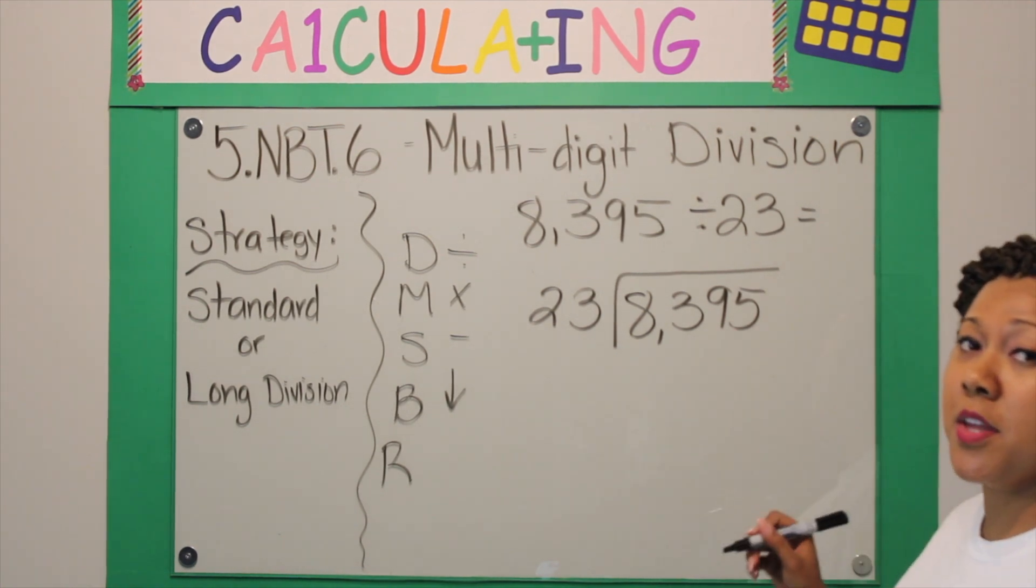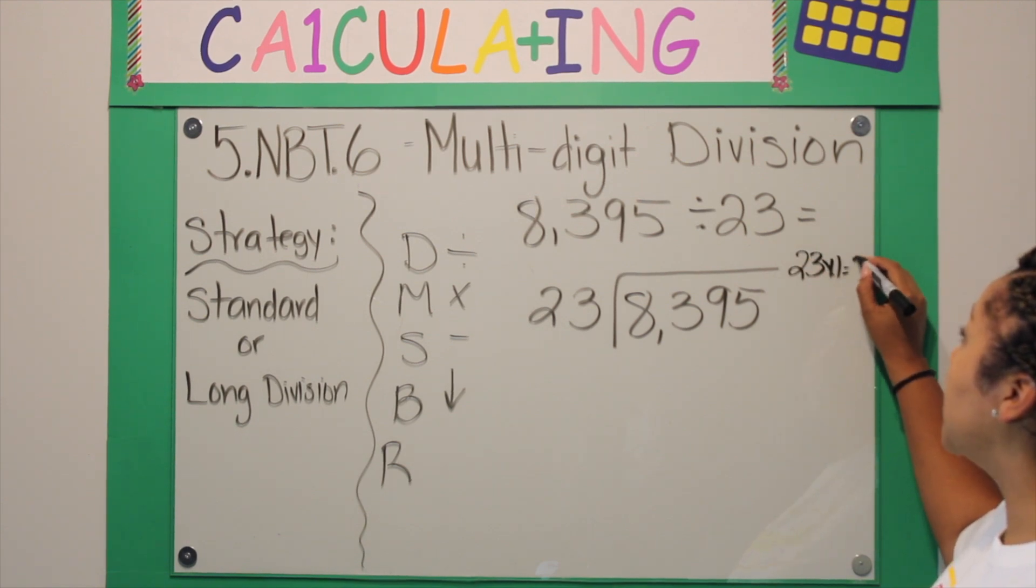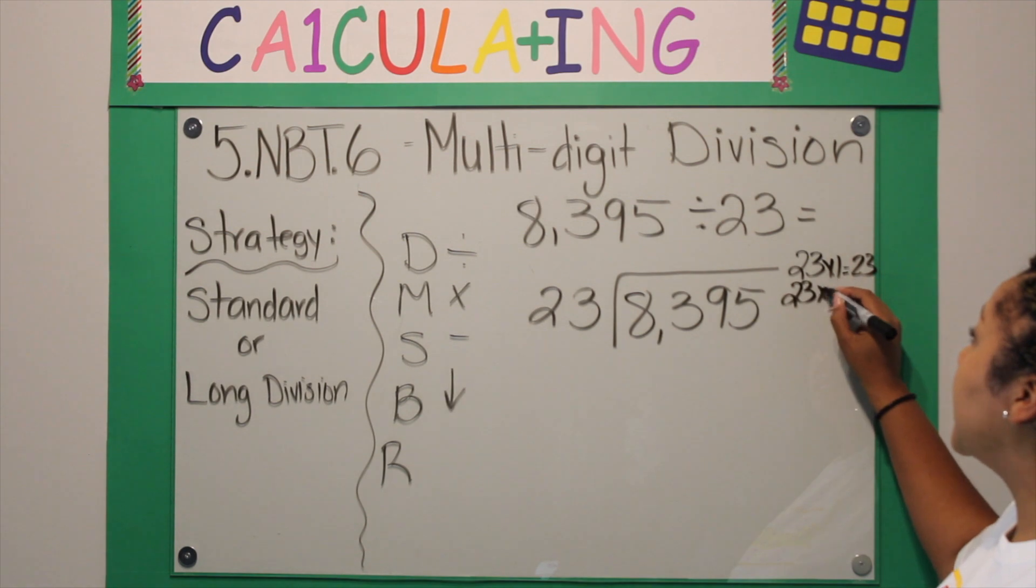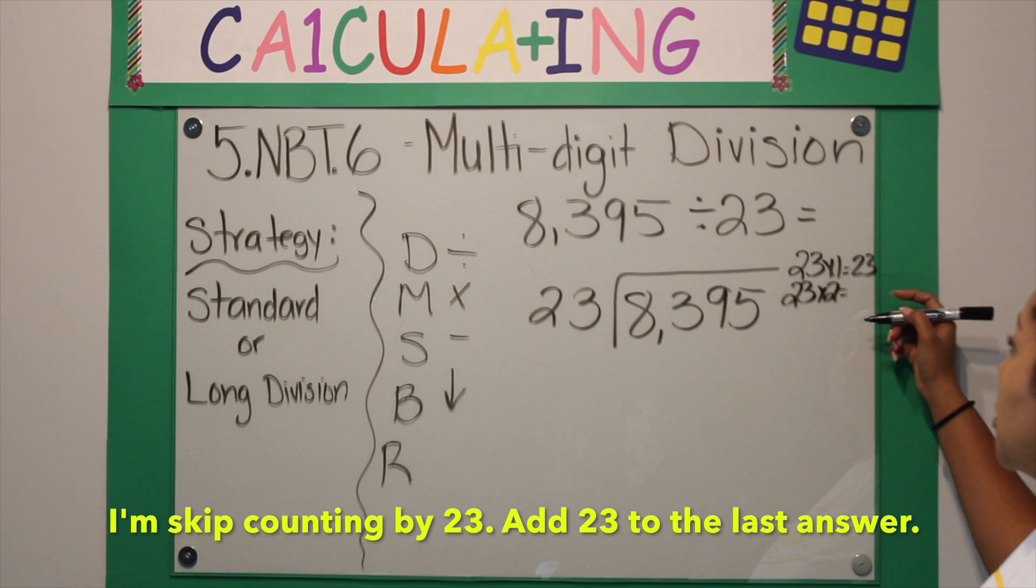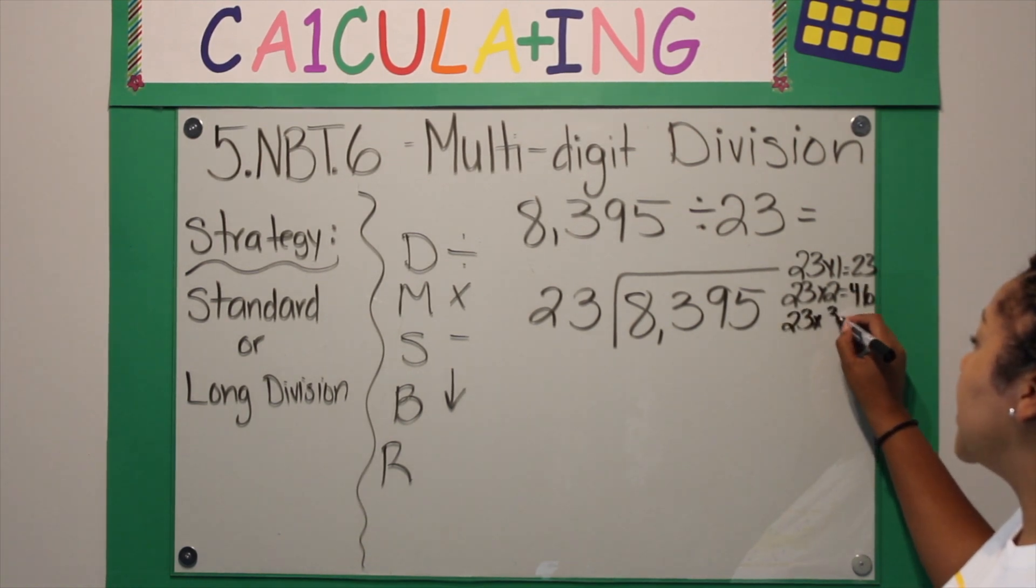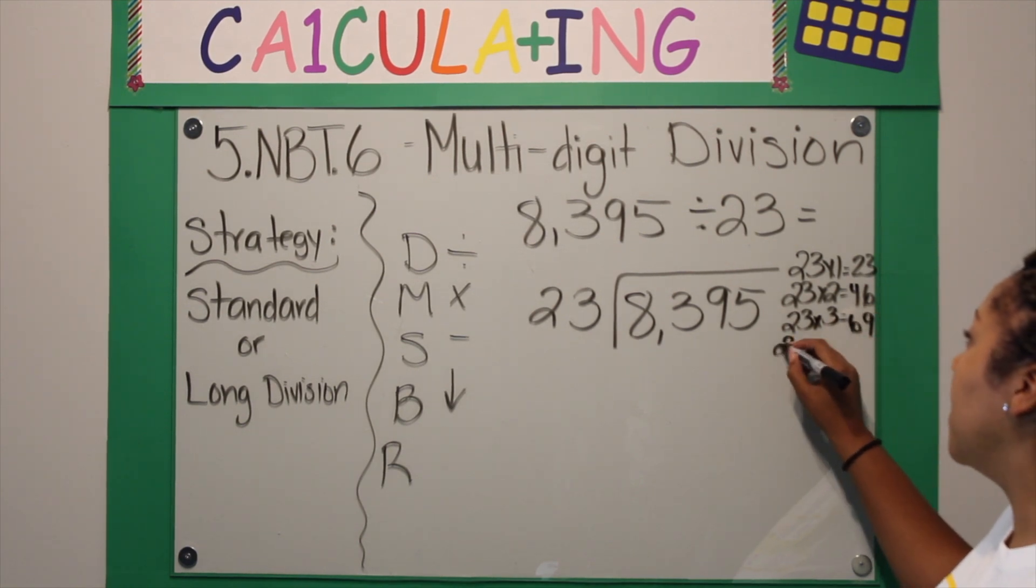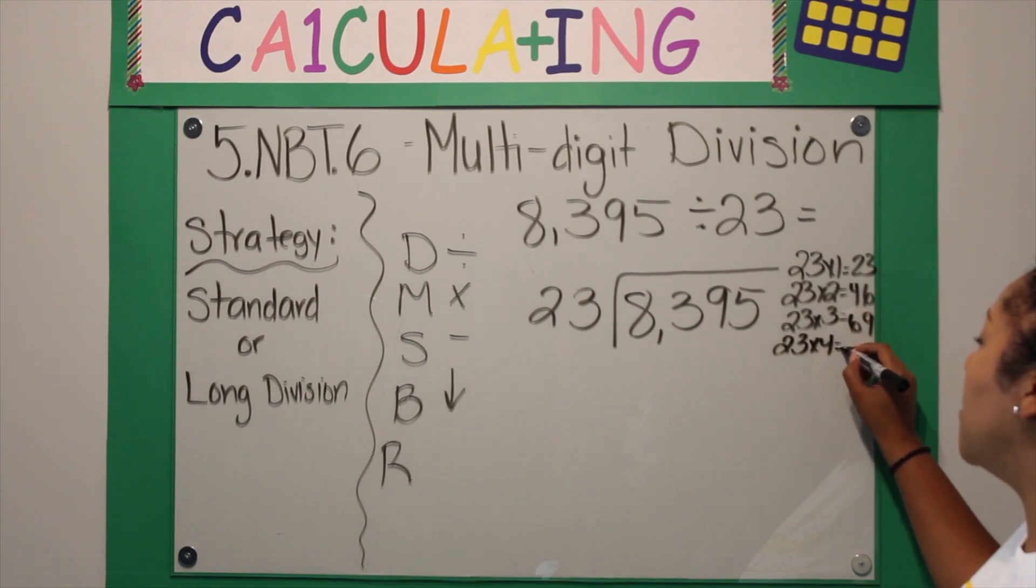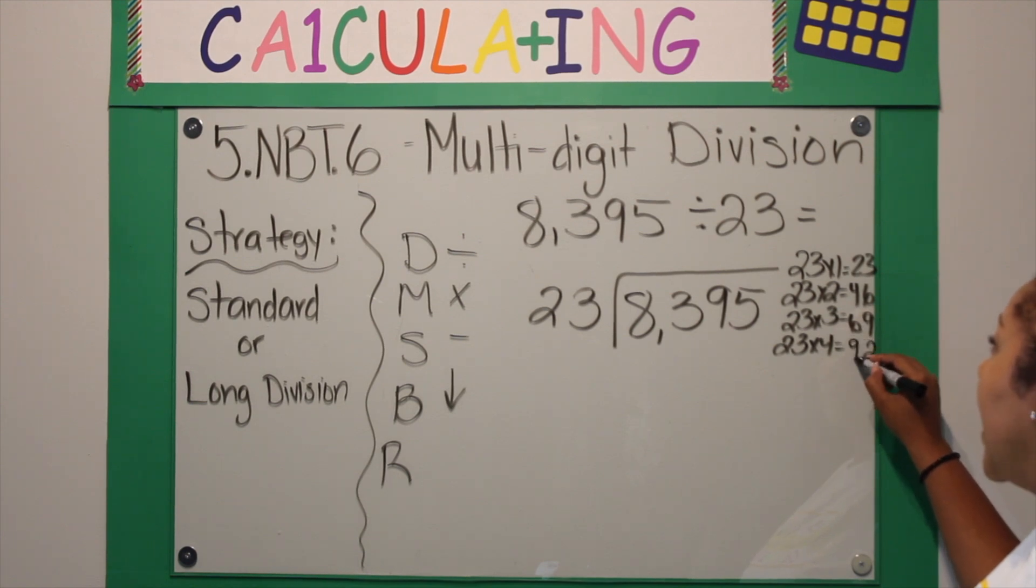Here I'm going to write down the multiplication facts for 23, which is also skip counting. So 23 times 1 is 23. 23 times 2, all you're doing is basically repeated addition, so 23 plus 23 is 46. 23 times 3 is going to be 69. 23 times 4, you're going to add 23 to the 69 - 9 plus 3 is 12, plus another 3 is going to be 92.